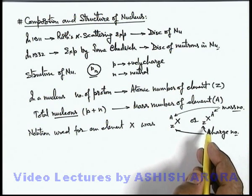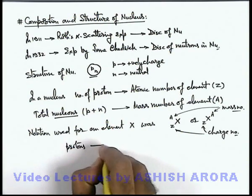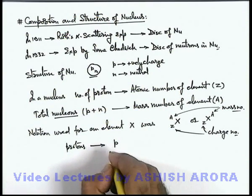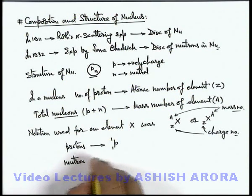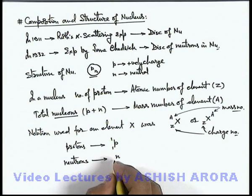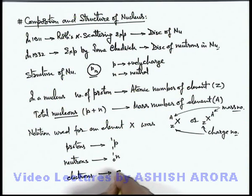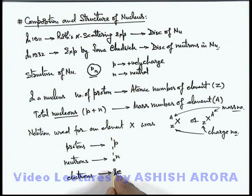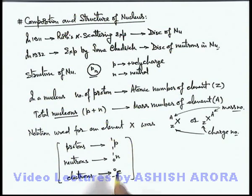In similar notation, elementary particles are also denoted. Protons are represented by the symbol p, with charge number 1 and mass number 1. Neutrons are represented by the letter n, with charge number 0 and mass number 1, because there are no charges with neutrons. For electrons, the mass is approximately zero — negligible compared to protons and neutrons — so the mass number is 0 and the charge number is minus 1. This is how the basic elementary particles are represented on paper.